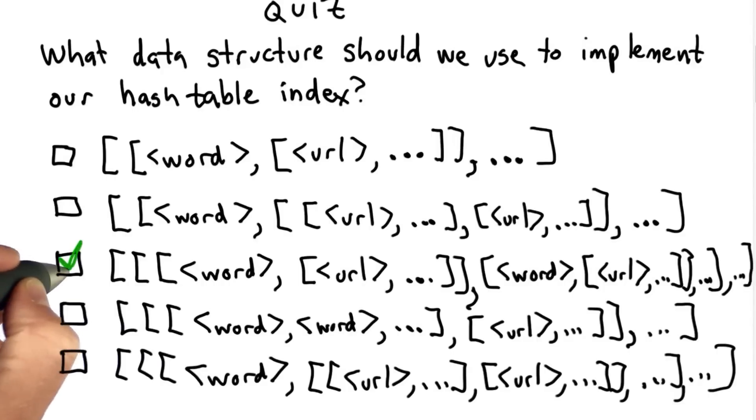So the answer is the third choice. These data structures are getting complicated enough that they're fairly hard to read. We need to think about what components we need to represent the hash table.